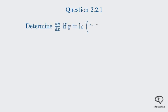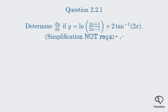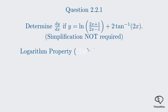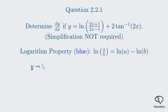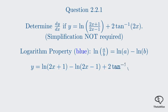Next up is Question 2.2. We need to find the derivative of y equals the natural log of the quantity 2x plus 1 over 2x minus 1, plus 2 times the inverse tangent of 2x. We don't need to simplify the answer. The first term looks complicated because of the fraction inside the natural log, but we can simplify it using a fundamental property of logarithms. The natural log of a quotient equals the natural log of the numerator minus the natural log of the denominator.